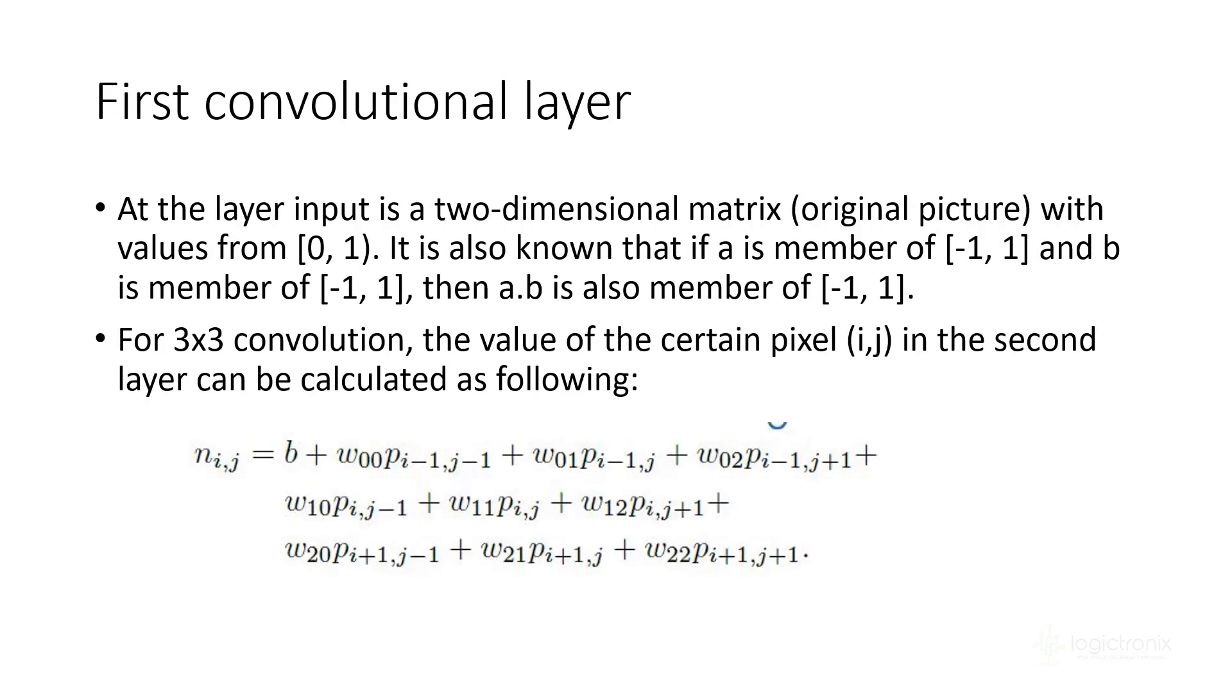In the convolutional layer, we have the input and different layers of convolution. In the first stage, we need to map that image into a two-dimensional matrix and apply values from 0 to 1 based on the grayscale of that pixel. It's best practice to minimize the size of the input so that it's much easier for calculation.